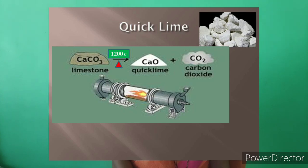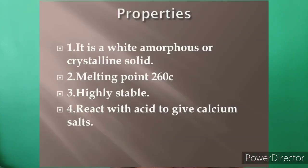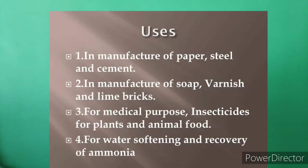Quick lime is obtained when limestone is heated at 1200°C. Properties: it is a white amorphous or crystalline solid, melting point 260°C, highly stable, reacts with acid to give calcium salt. Uses: manufacturing of paper, steel, cement, soap, varnish, and lime bricks.